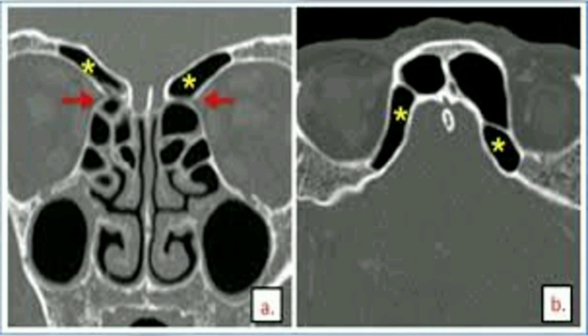These images show a CT scan — a coronal image on the left side and a transverse section on the right side. The yellow asterisks indicate the bilateral supraorbital ethmoidal air cells. A red arrow indicates the ethmoidal notch, which we'll be talking about later.